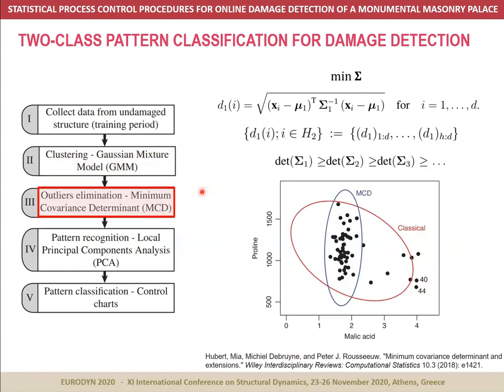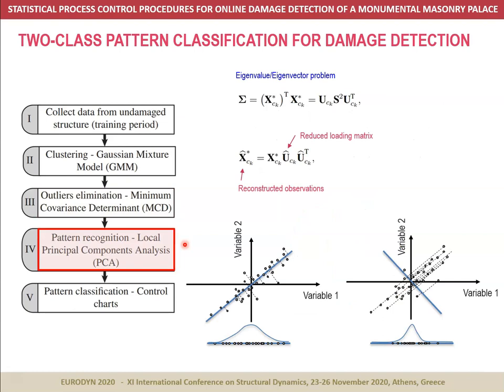Once the resonant frequencies are organized into clusters, the presence of outliers is minimized by using the minimum covariance determinant method. This approach consists in finding a user-defined percentage of the data population that minimizes the covariance matrix. The data points are sorted according to their Mahalanobis distances to their clusters, and those with maximum distances are eliminated. This process is defined in an iterative way until reaching the user-defined population size. At this point, the dataset has been organized into clusters and the outliers have been minimized, so we count on a clean training population suitable for constructing an accurate statistical regression model.